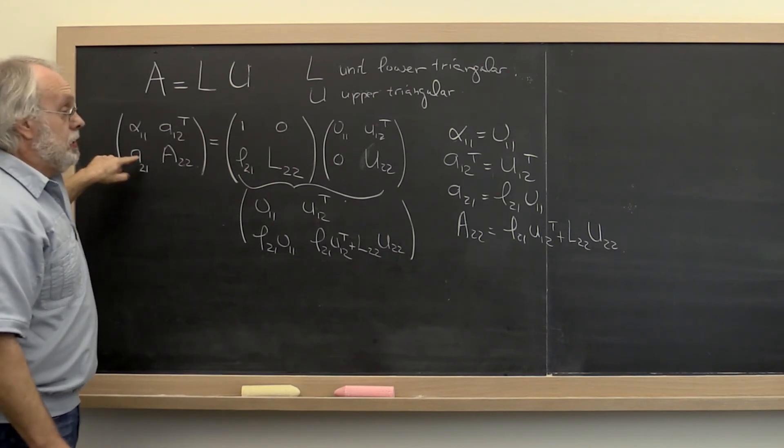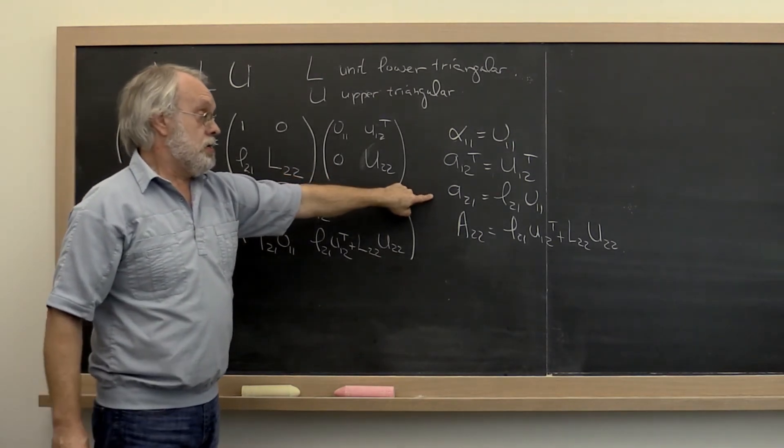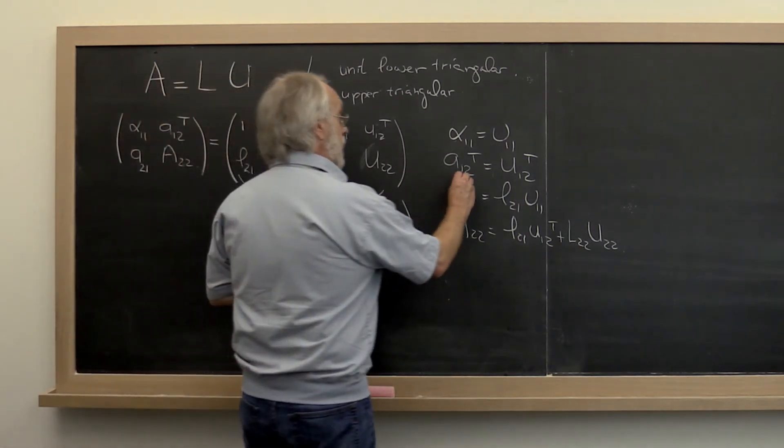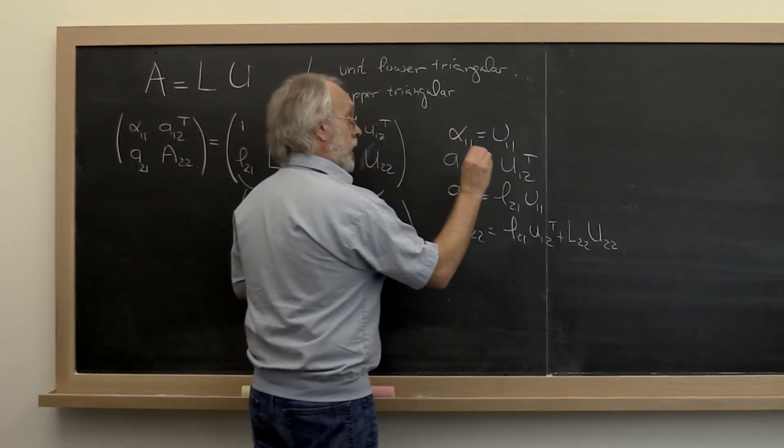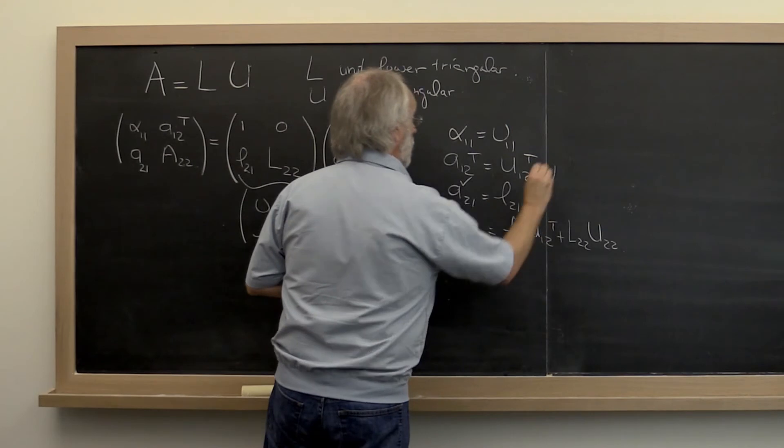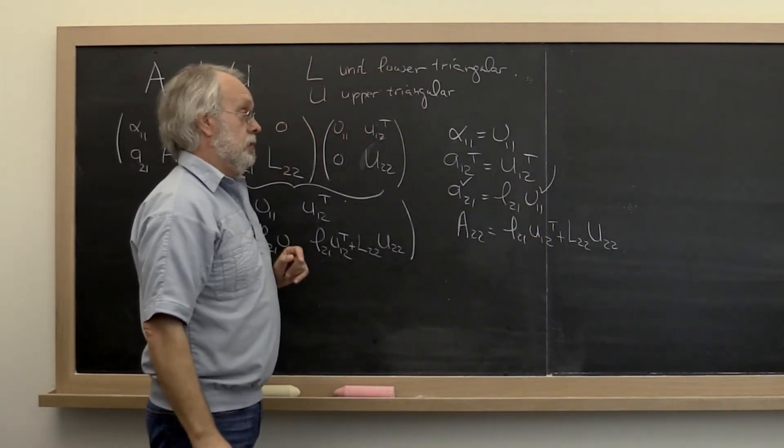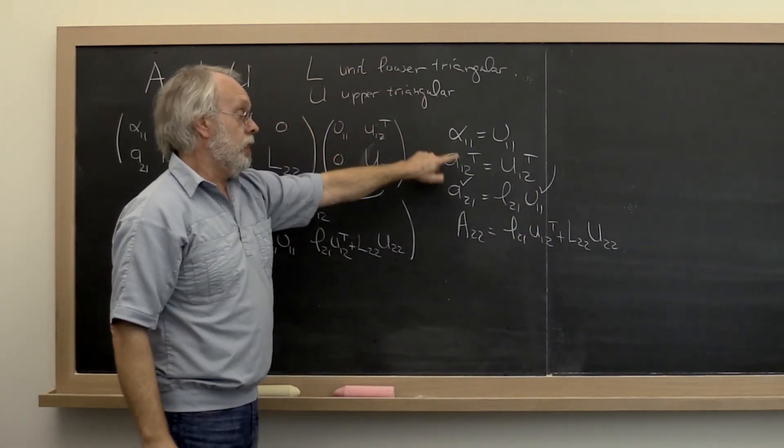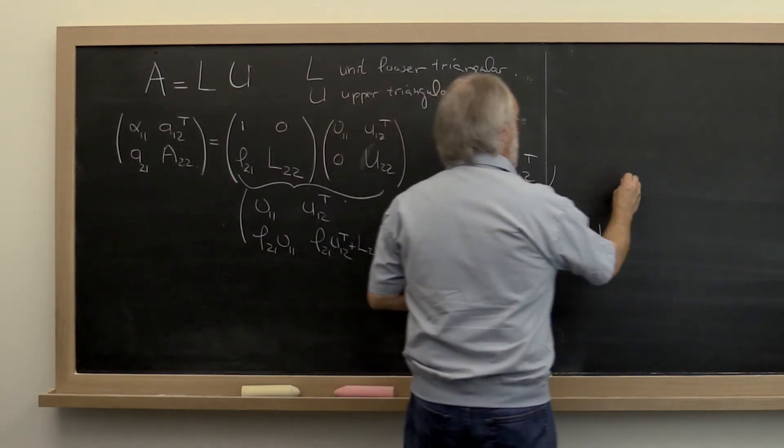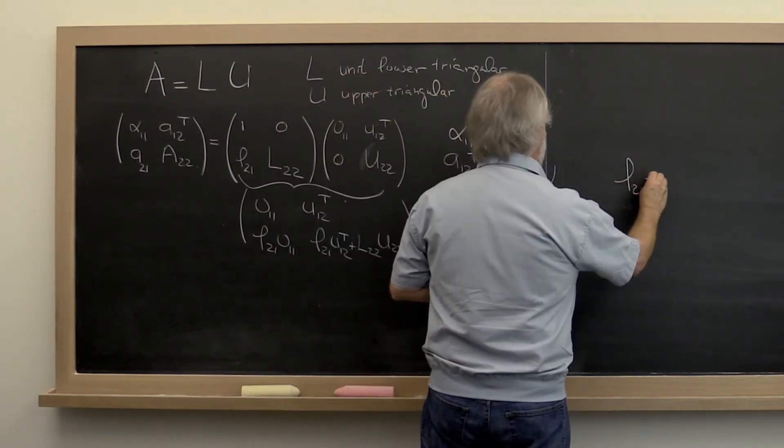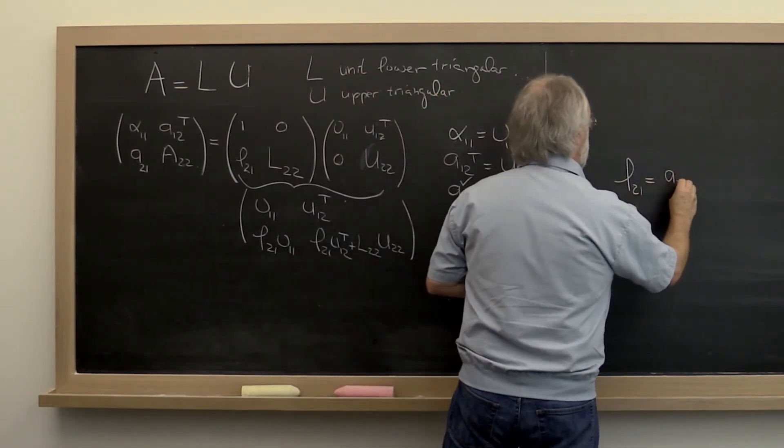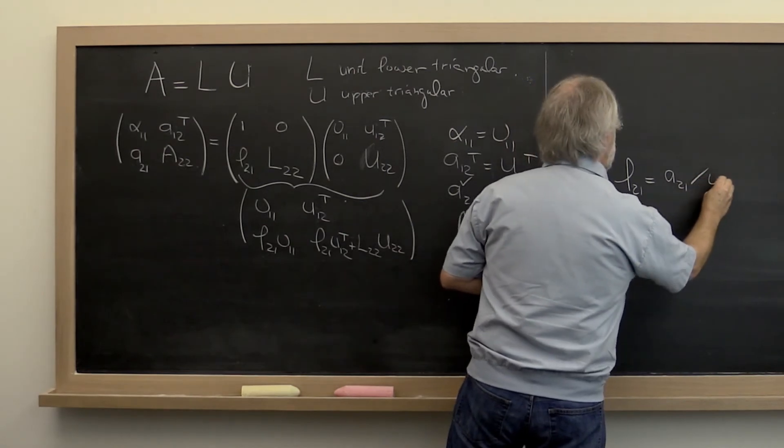Next, we're now down here. We know what A 2 1 is. We now know what upsilon 1 1 is because it's stored in alpha 1 1. Therefore we know that L 2 1 is equal to A 2 1 divided by upsilon 1 1.